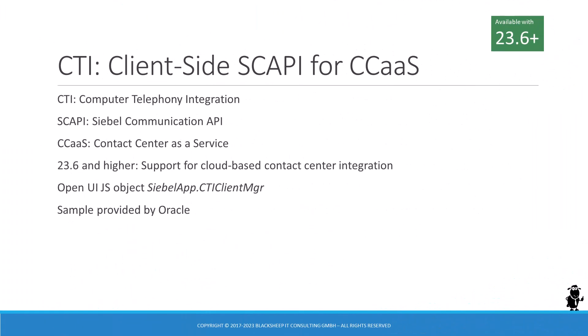Let's move on to CTI, which stands for computer-telephony integration. This is one of the key technologies in contact centers, and Siebel CRM has a long-standing tradition of supporting various third-party products to assist call center agents engaging with customers via phone, email, or chat, just to name a few supported channels. The rise of cloud technologies brought forth contact center as-a-service, combining the power of omni-channel contact centers with the benefits of the cloud. With Siebel CRM 23.6, integration with cloud-based contact center offerings has become much easier. Oracle provides a new client-side integration layer which, thanks to being part of the Siebel Open UI API, should prove highly customizable.